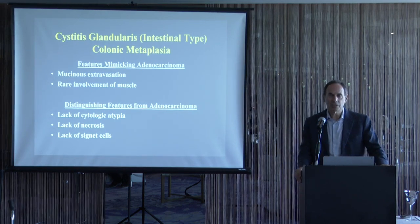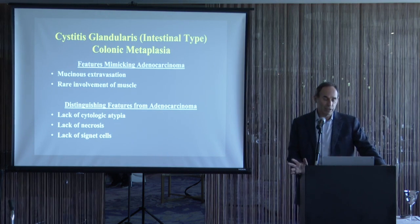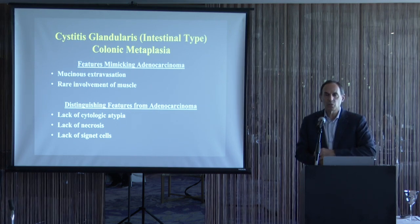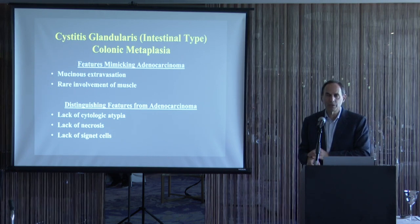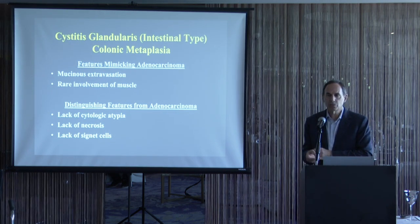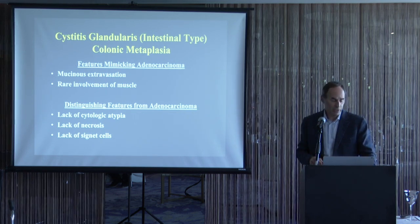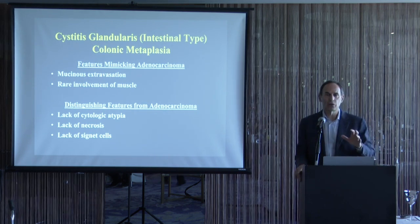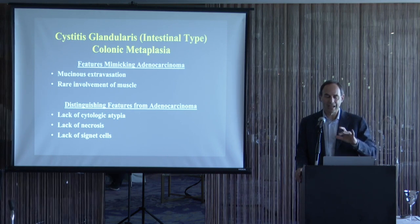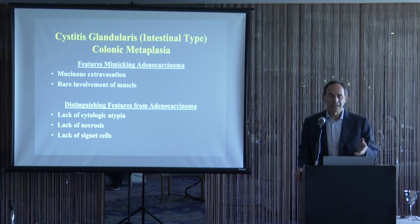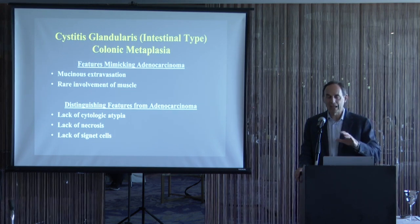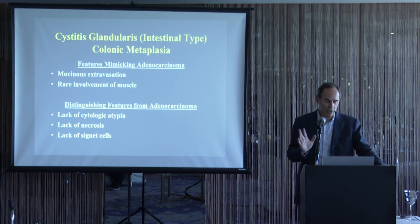Intestinal-type cystitis glandularis is also termed colonic metaplasia because the tissue looks almost like normal colon. It can mimic adenocarcinoma due to prominent mucin extravasation, and intestinal metaplasia can involve the muscularis propria. This is a key distinction: glandular mimickers can involve the muscularis propria, but if you see a urothelial process in the muscularis propria, it has to be tumor.